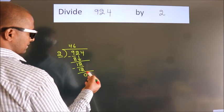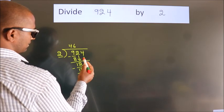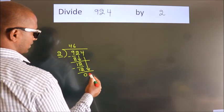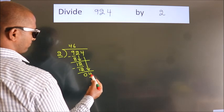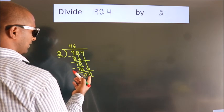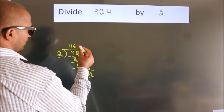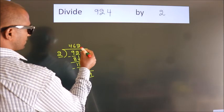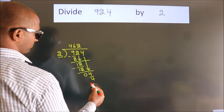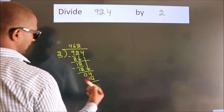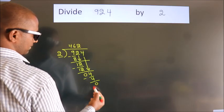After this, bring down the beside number — so, 4 down. So, 4. When do we get 4 in the 2 times table? 2 twos, 4. Now we subtract. We get 0.